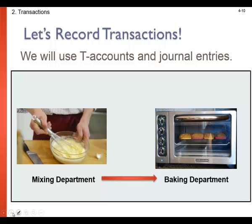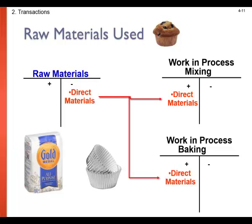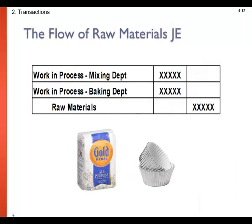Let's look at how we apply costs based on financial accounting transactions. Remember, our inventory accounts are all assets, so they increase on the left side with a debit and decrease on the right side with a credit. Raw materials can be applied to any department regardless of the sequence of operations. In this case, we apply flour to our mixing department and baking liners to our baking department. We debit or increase the work in process accounts for those departments that use the raw materials, and we credit and reduce our raw materials account.